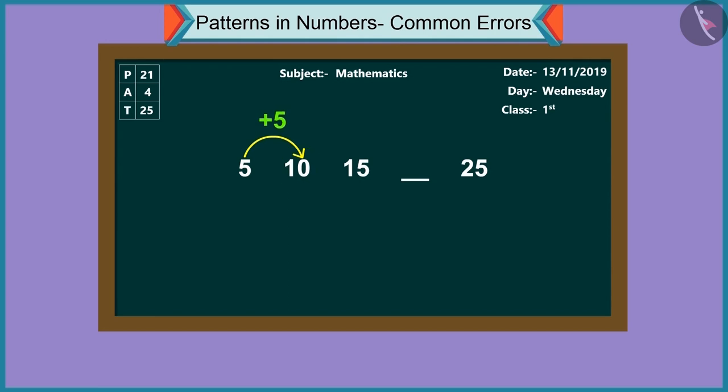Like adding one to five makes six. Adding two makes it seven. Adding three makes it eight. Adding four makes it nine. And adding five has made it ten. This way, five has been added each time to carry the pattern forward.